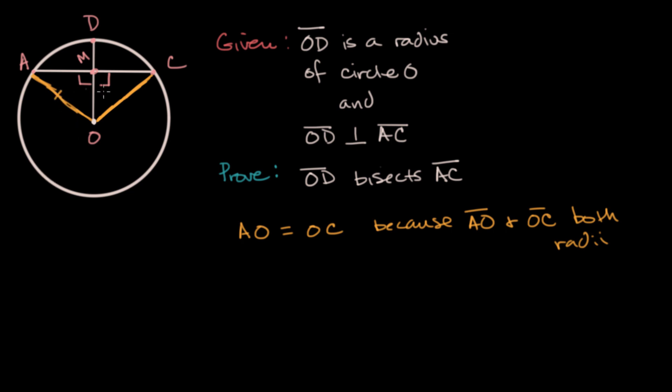And then we also know that OM is going to be congruent to itself. It's a side in both of these triangles. So let me just write it this way. OM is going to be congruent to OM. And this is reflexivity, kind of obvious. It's going to be equal to itself, going to be congruent to itself.